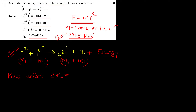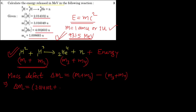So: Δm = (m1 + m2) − (m3 + m4), where m1 is the mass of deuterium and m2 is the mass of tritium. Substituting: Δm = 2.014102 + 3.016049 minus (mass of helium + mass of neutron).